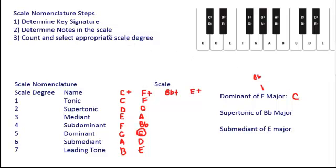Let's try the supertonic of B flat major. So the first step again is to determine the key signature. B flat major has two flats, a B flat and an E flat. So the next step now that we have that is to determine the notes in the scale.